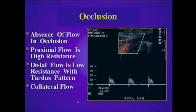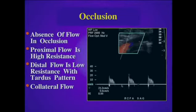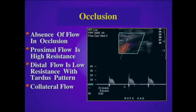In cases of occlusion, there will be an absence of flow in the occluded segment. One of the important clues for occlusion is that we'll have abnormal proximal waveforms with very high resistance in the diastole. In this example of occlusion of the common femoral artery, we have a rapid systolic upstroke, a low peak systolic velocity of 21 centimeters per second, and absence of flow throughout diastole due to the higher resistance caused by the obstruction. If there is reconstitution of the distal arterial bed, we will see low resistance waveforms with a tardus pattern, and similarly low resistance flow in collaterals that supply the lower extremity due to vasodilatation from lower extremity ischemia.